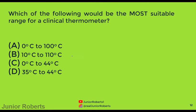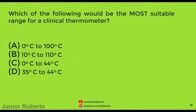This question asks which range is most suitable for a clinical thermometer. A clinical thermometer measures human body temperature, with the optimum at 37°C. Temperatures rarely drop below 30°C, so the best range covers that region up to about 44°C. The answer is D.